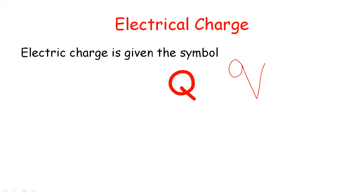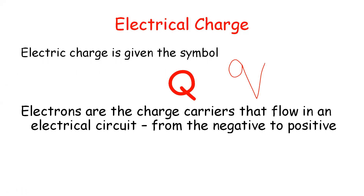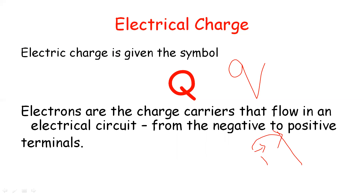Q represents electrical charge. Electrons are charge carriers that flow in an electrical circuit from the negative to the positive terminal. The negative terminal repels the electron, and the positive side attracts the electron. Electrical charge is obtained due to the transfer of electrons and is represented by the symbol Q.